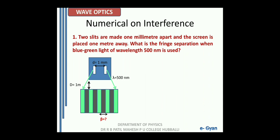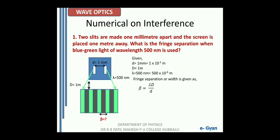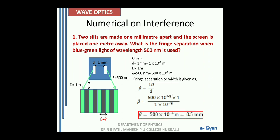Fringe separation or fringe width is the distance between two alternative bright or dark fringes. The distance between the slits is 1 mm, distance between the slits and screen is 1 meter, and wavelength is 500 nanometer. The fringe separation is given as beta equal to lambda into capital D divided by small d. On substituting the values we get beta equal to 500 into 10 raised to minus 9 into 1 divided by 1 into 10 raised to minus 3, giving a fringe width beta equal to 0.5 millimeter.